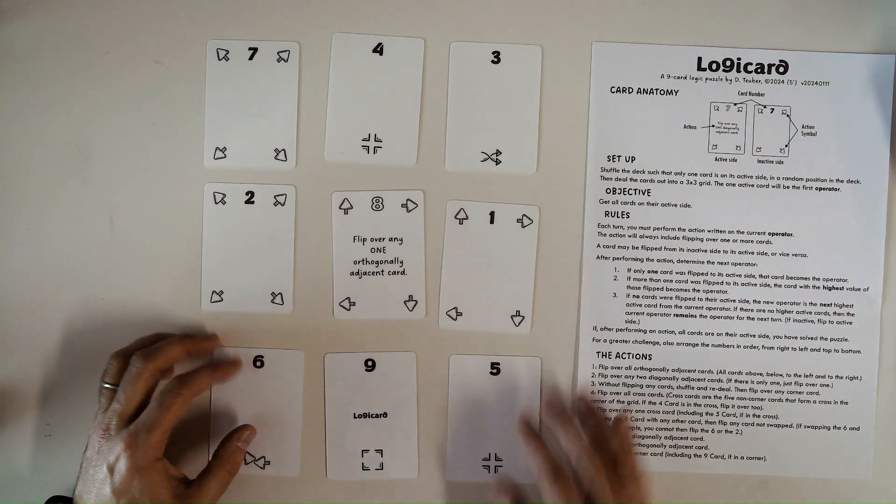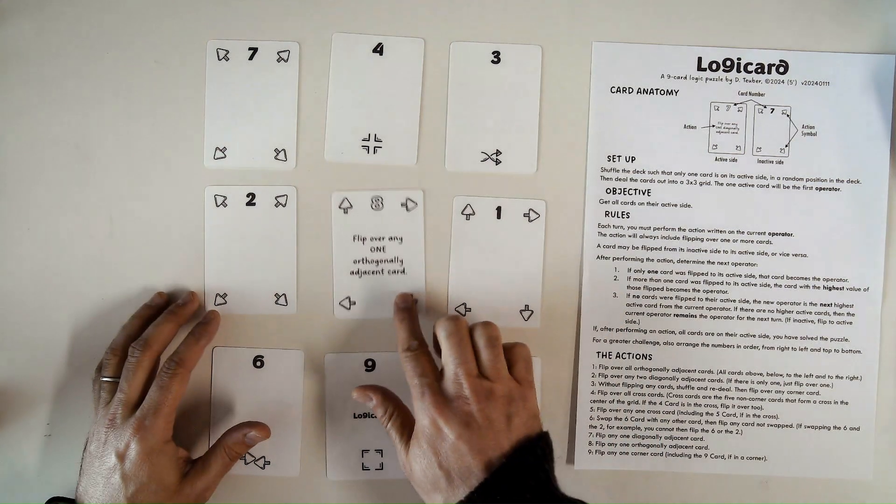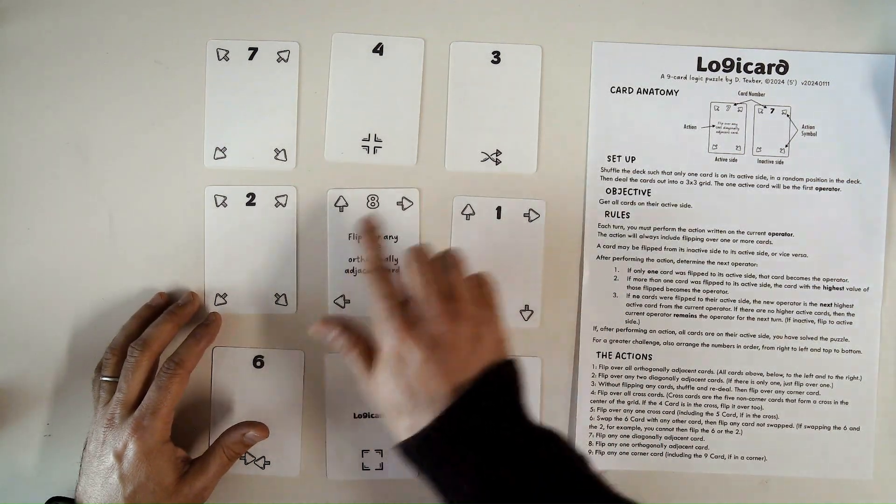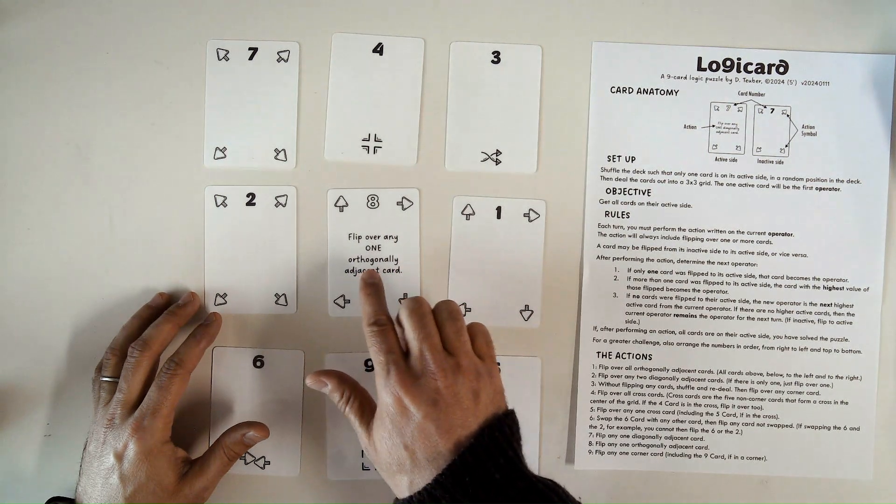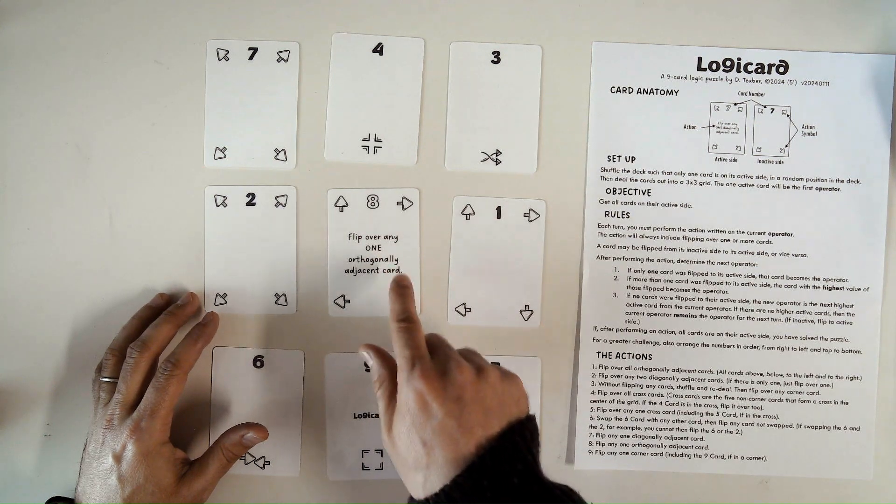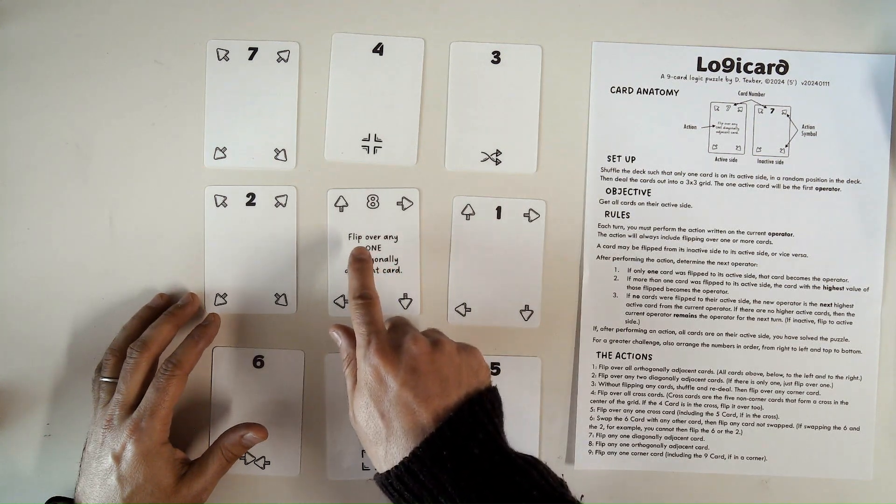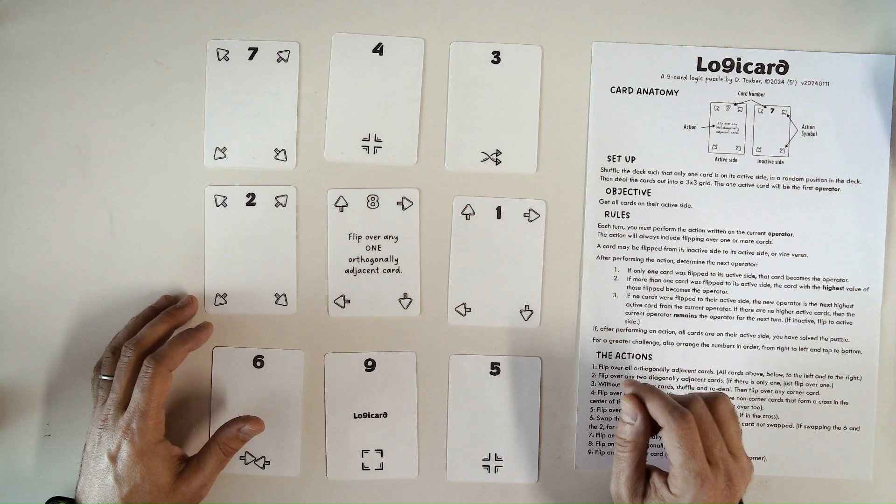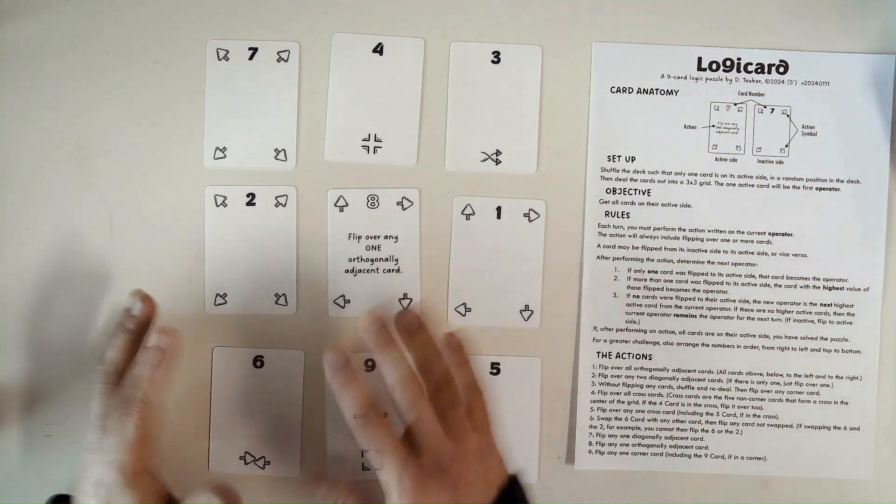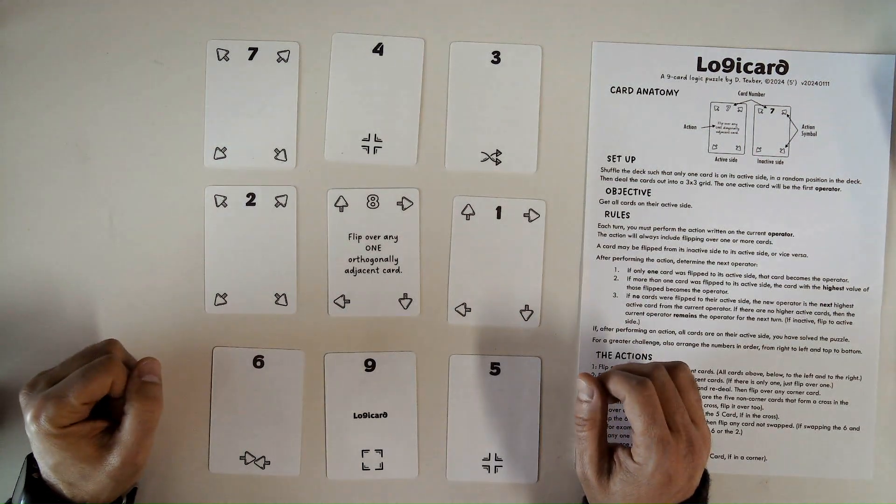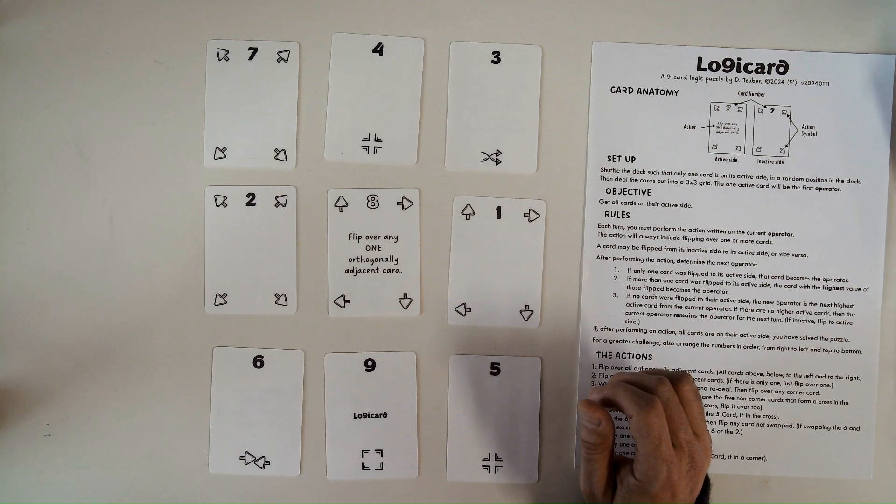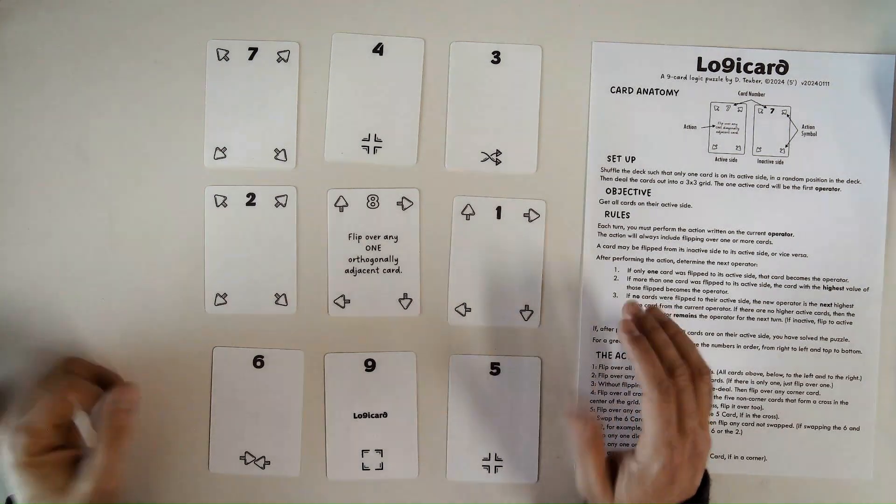And the way the game works is each turn, you'll have one operator card, which is an active card, and you'll need to follow the instructions on the card. So at the start of the game, the one flipped over card is the operator, and it says flip over any one orthogonally adjacent card. So you'll perform that action, and then you'll check for what the next operator will be. So I'm just going to go through a game, and you'll see how it works.